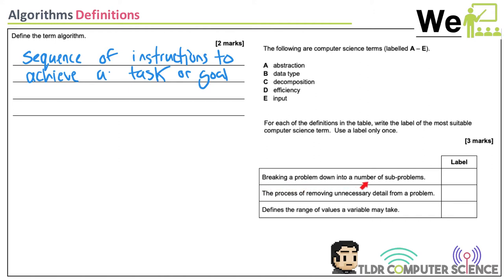Breaking a problem down into a number of sub-problems — that's decomposition. The process of removing unnecessary detail from a problem is abstraction. You don't want to make your problem more complicated than it needs to be, so you remove unnecessary detail to focus on the important information.